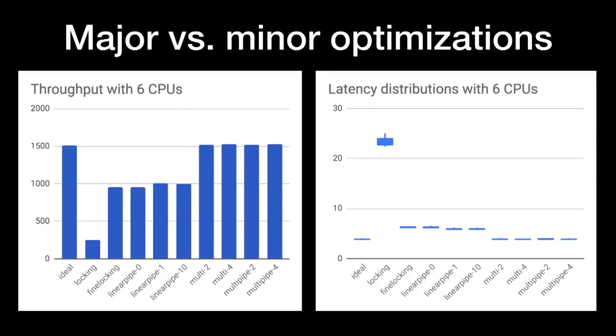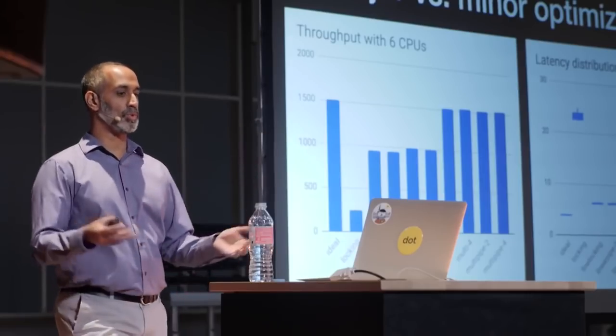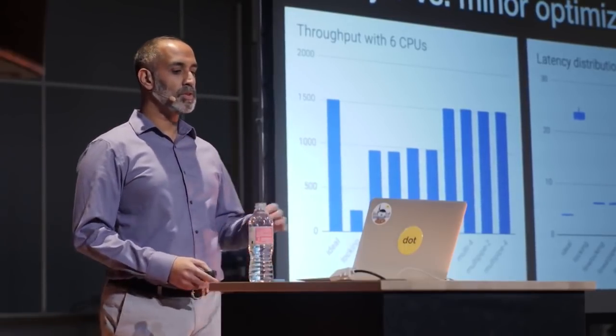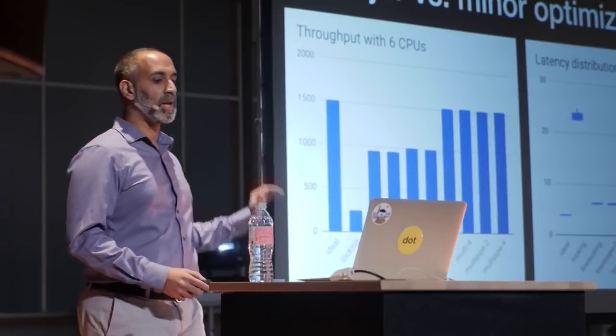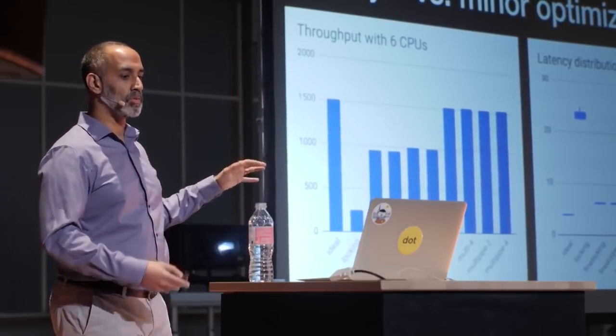While we see a benefit with buffering, it's important to keep those gains in perspective. These charts compare all the implementations we've seen, plus two multi-pipe scenarios that run multiple copies of the buffered coffee pipelines. What we see is that the differences between fine-grained locking and the various pipelines — the middle four bars — are all pretty minor. The two big gains came from structural changes: the first was moving from a whole-kitchen lock to fine-grained per-machine locks, reducing the time spent in any one critical section so more work could run in parallel. The second was recognizing when our existing resources were fully utilized and adding more capacity.